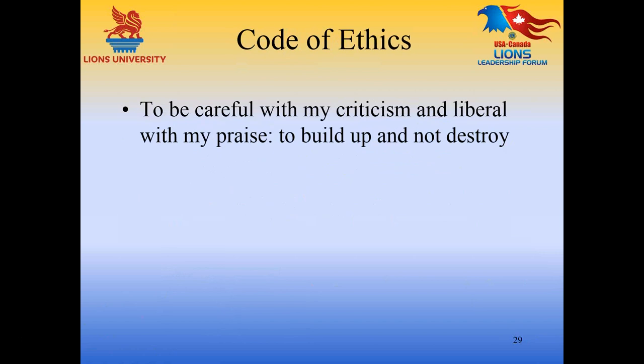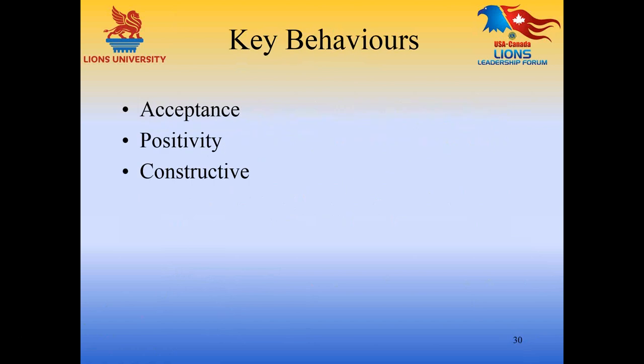'To be careful with my criticism and liberal with my praise, to build up and not destroy.' This final statement refers again to the golden rule, but goes one step further — we are to be liberal with our praise and constructive. The keys here are acceptance of one another, being positive in our undertakings, and being constructive. It's easier to find fault and criticize than to be constructive and find solutions. As Lions, we are ethically bound to do the latter.